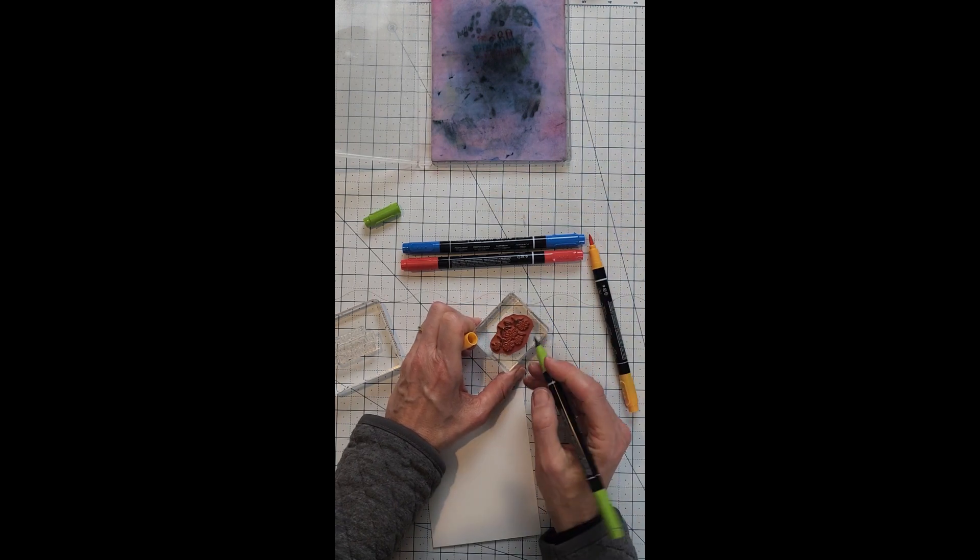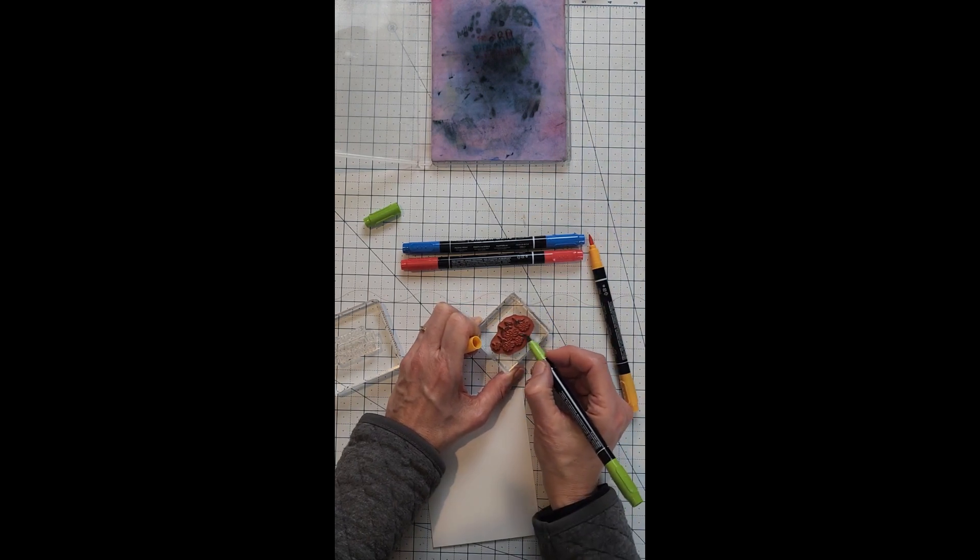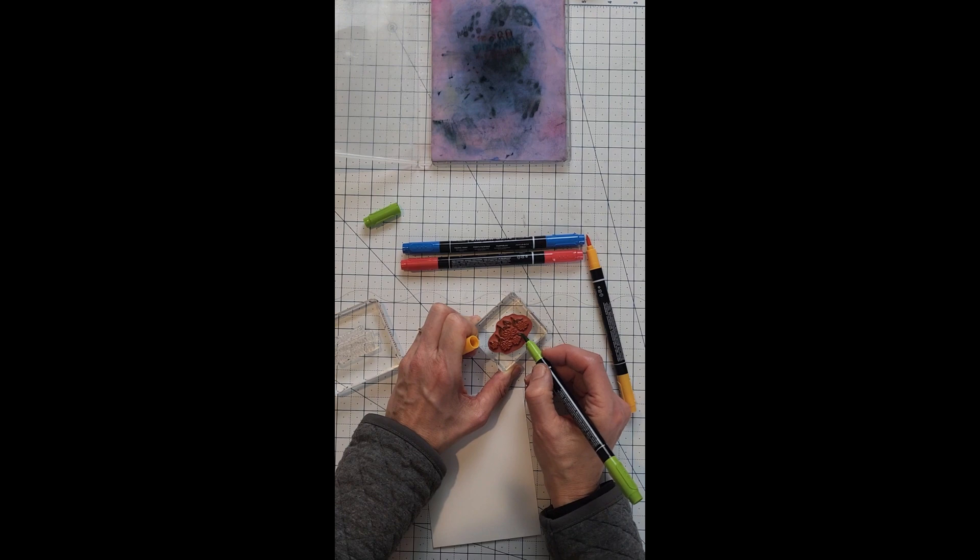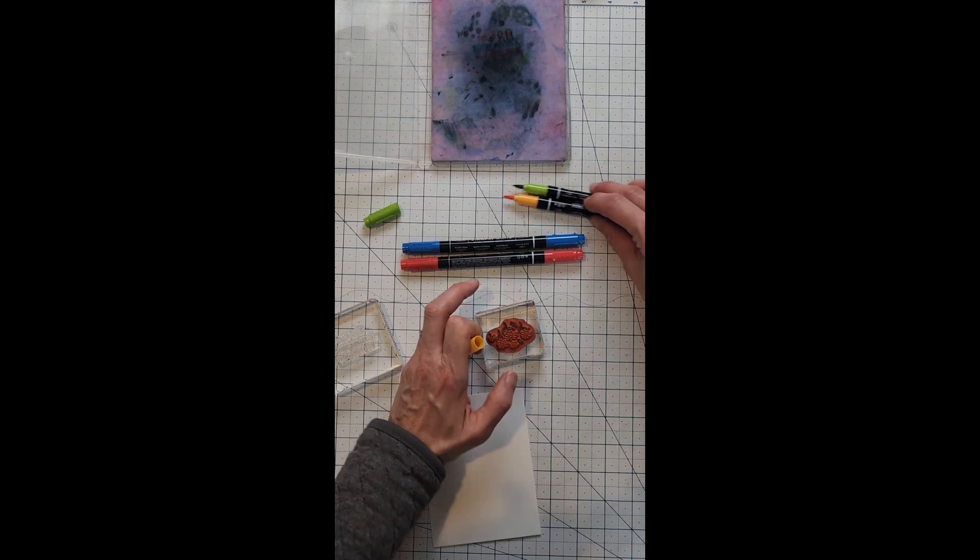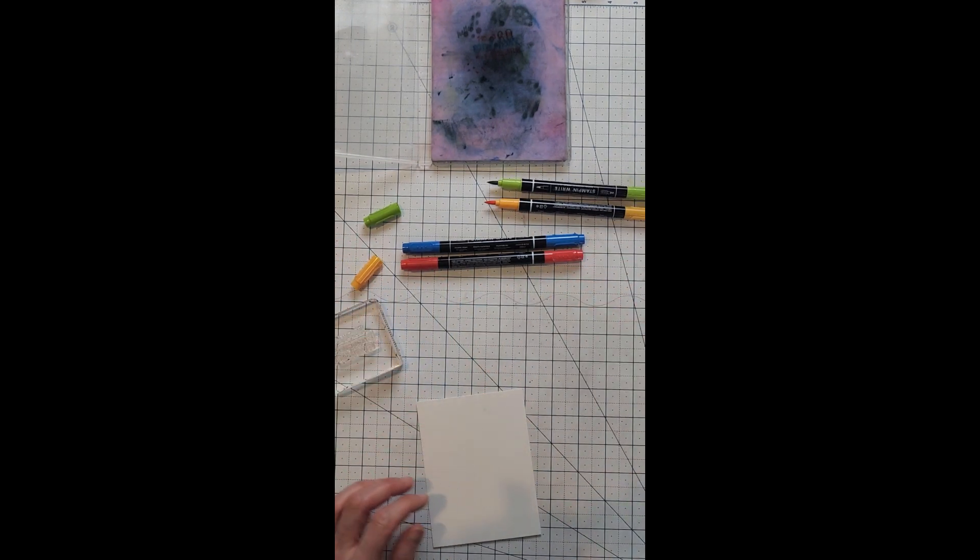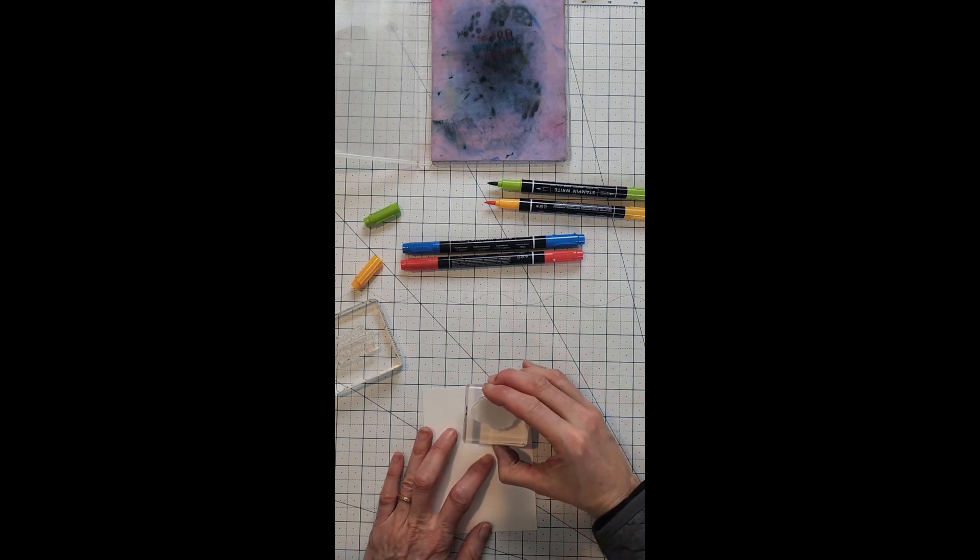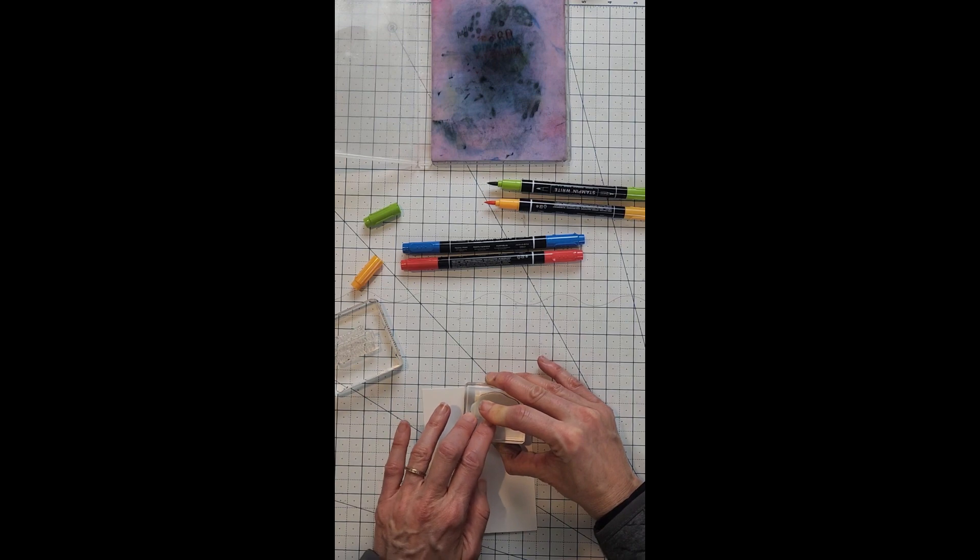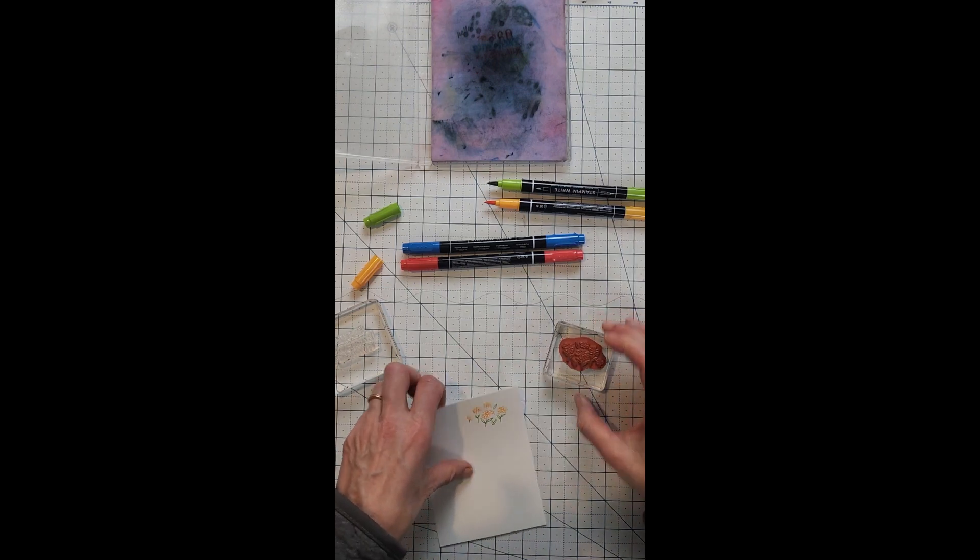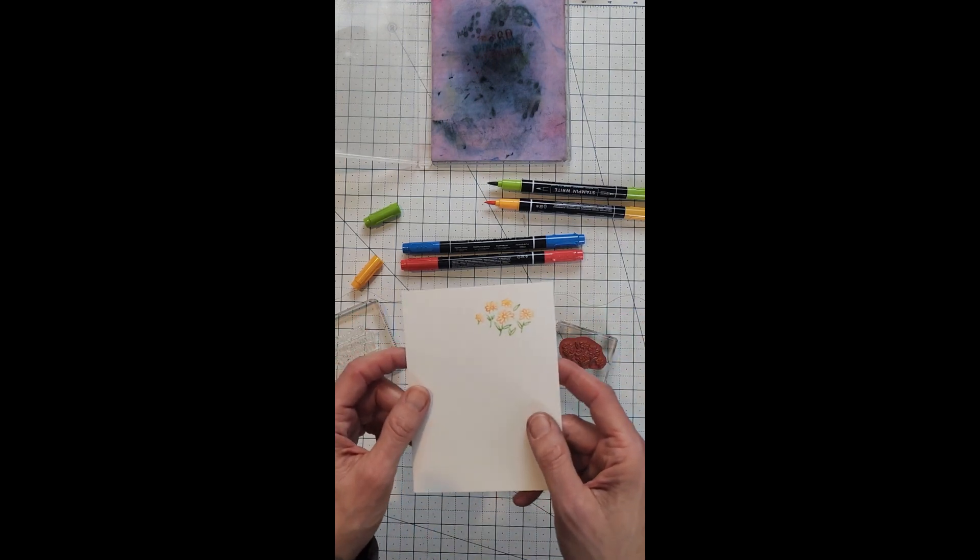I forgot a leaf here so let's go back. Do that. Then you'll want to huff on it. This re-wets the stamp and then just press it down and you get a pretty watermarked image.